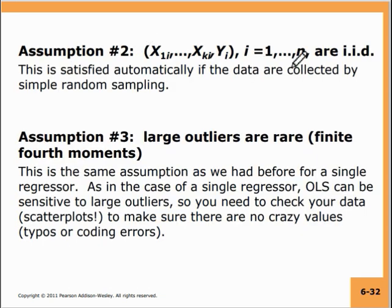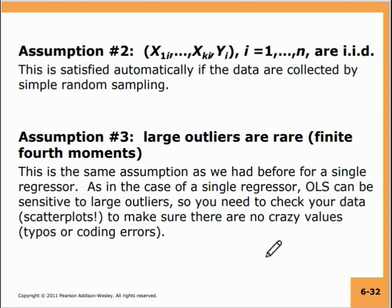The second assumption — that x1 up to xk are IID — is satisfied automatically if the data is collected by simple random sampling. The third assumption — large outliers are rare, finite fourth moments — is the same as for a single regressor. OLS can be sensitive to large outliers. If some data is very far from the typical values of x1 or x2, you might fit a line influenced by those outliers, as we saw in the single variable case.